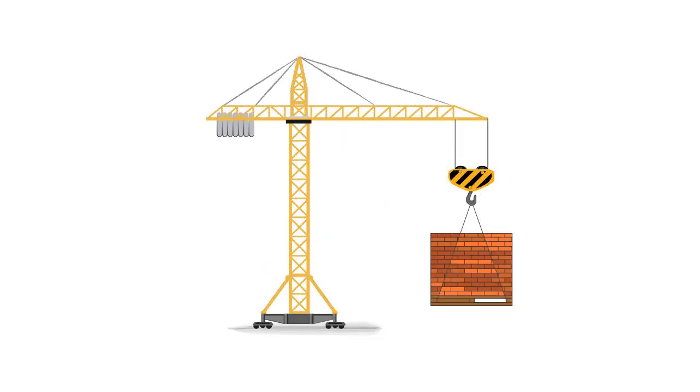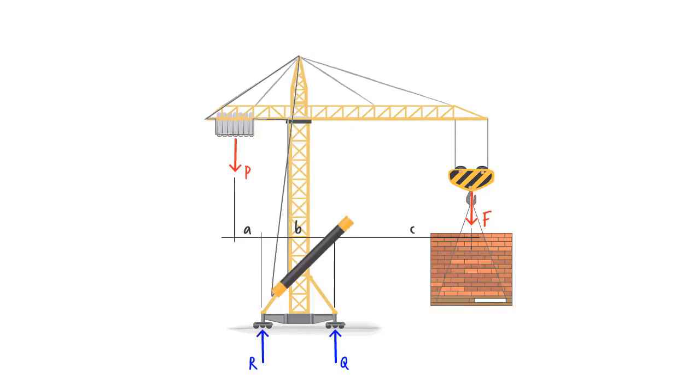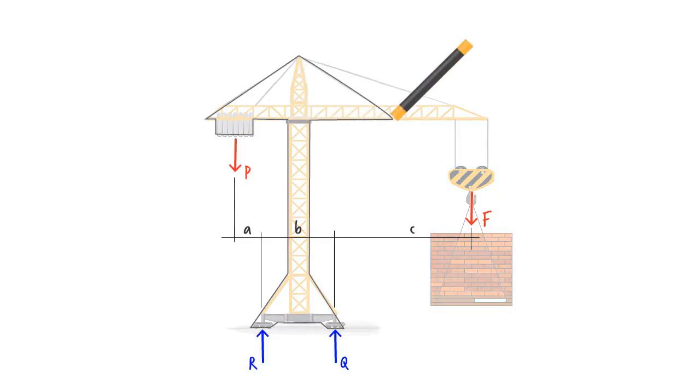For example, in the case of this crane, if we were to analyze the system as a whole, that is, if we wanted to calculate the reactions at the base of the crane, then the relevant information would be the two applied forces, the two reaction forces at the base of the crane, and the distances among these forces. To place these forces and distances in proper context, we may also want to draw the outline of the system like this.